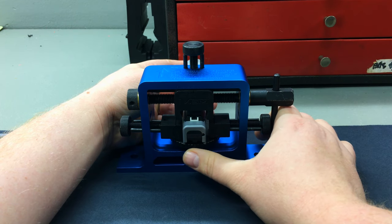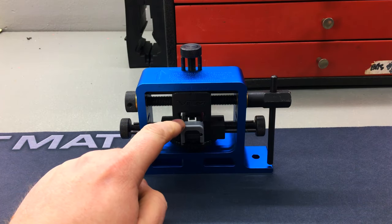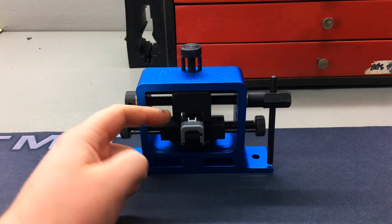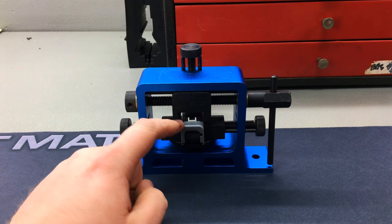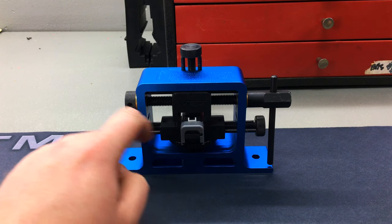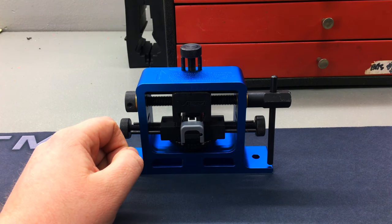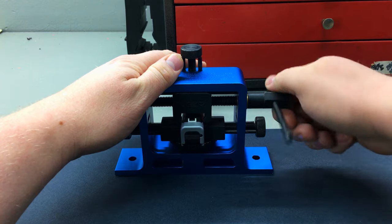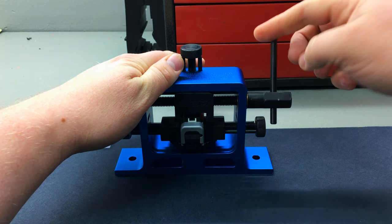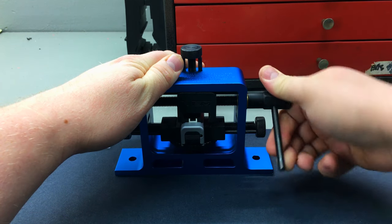And basically the height that you want this at is just high enough so that you've got a good purchase on your sight with these two little arms here. But you don't want it so low that it would make contact with the top of your slide. Once you've got everything in place, you'll go ahead and just rotate the handle here in order to get your sight out of position.